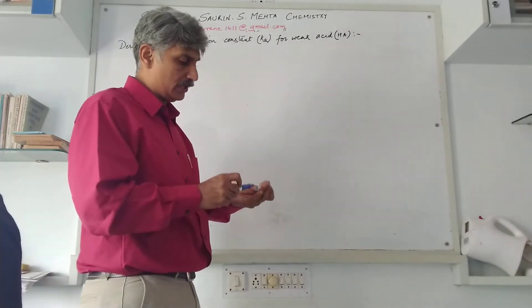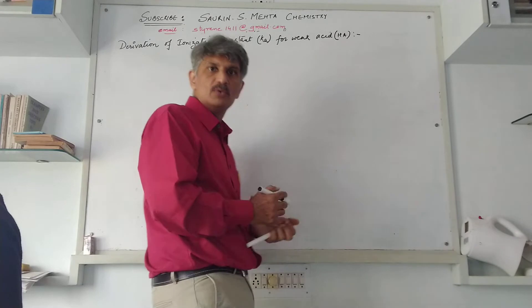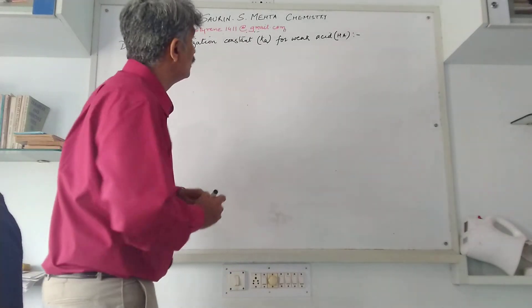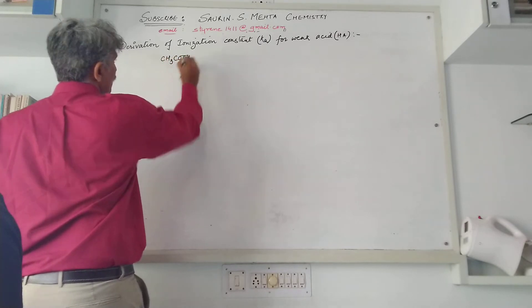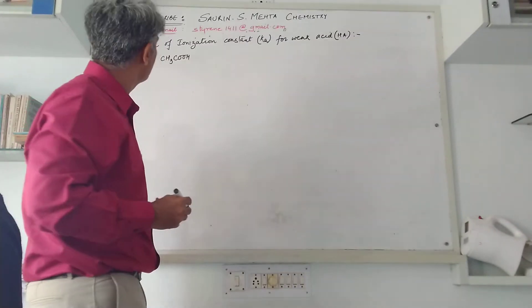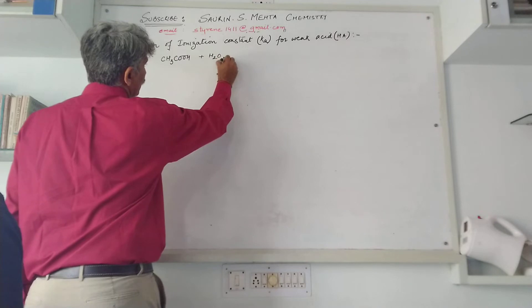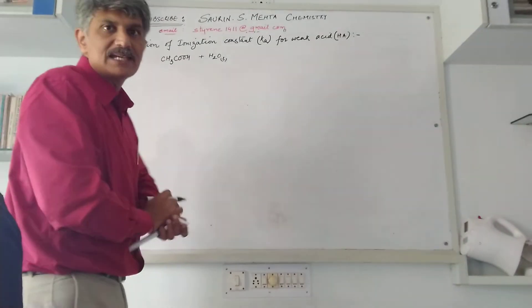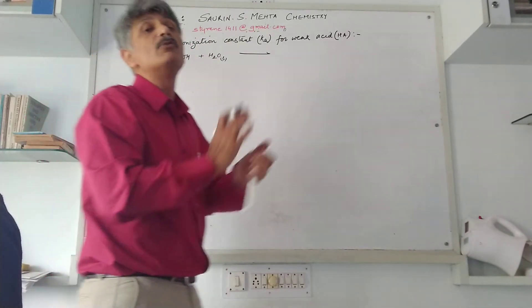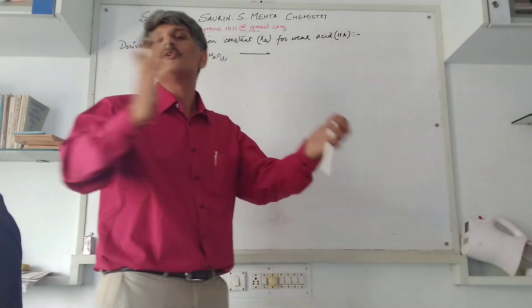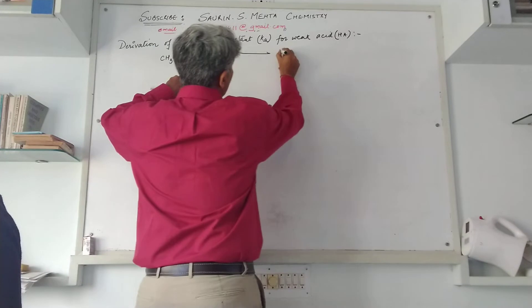So we will derive the ionization constant Ka for such a type of weak acid. For your simplicity in understanding, I will not write in general but I'll take one specific compound so that you can understand it more thoroughly. Suppose over here I consider CH3COOH or acetic acid. If this is there, I react acetic acid with H2O liquid. Now what happens when acetic acid is reacted with water? Acetic acid will try to ionize, but as you know it is a weak acid, it cannot ionize completely. So it will ionize partially into its own ions, that is CH3COO-.